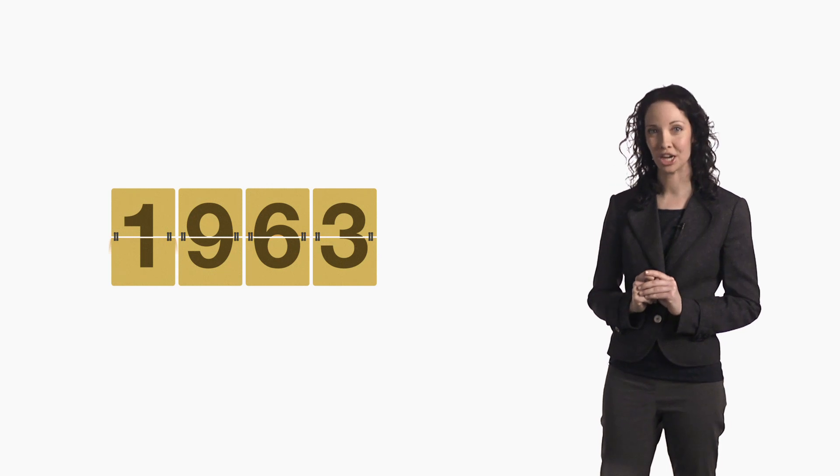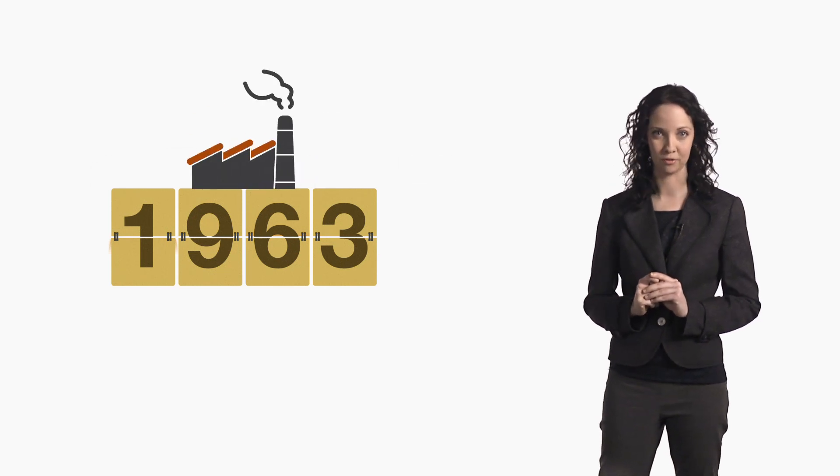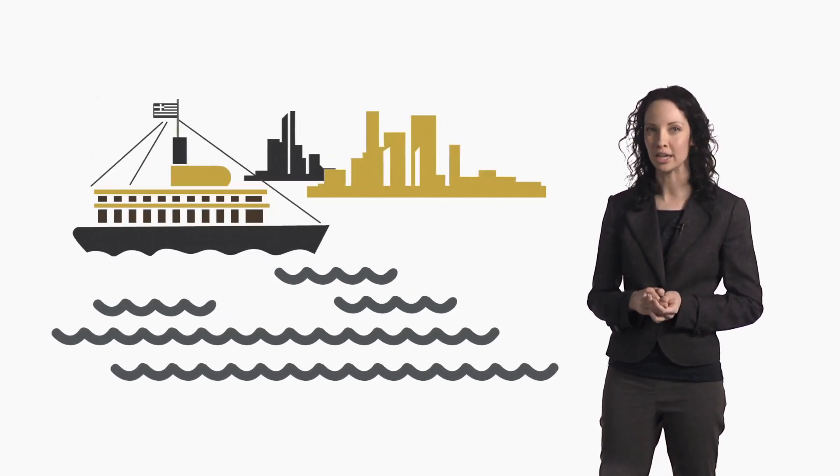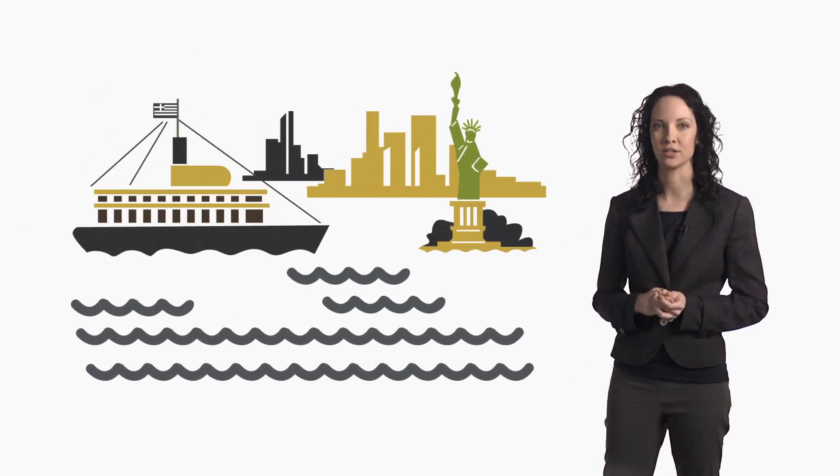In 1963, the paper cup company Sherry Cup saw a chance to create a new type of cup. They called this cup the Anthora, and it was basically created in response to all the Greek immigrants who were opening up delis and diners in New York.